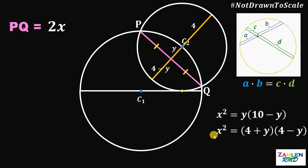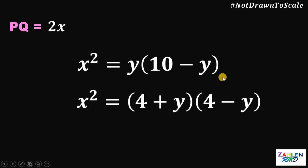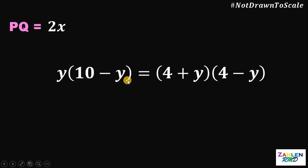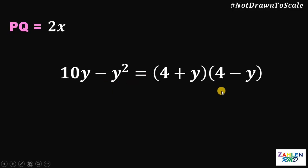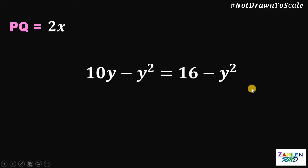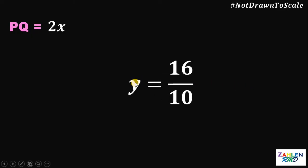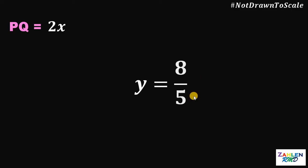We have two equations: x squared equals y(10 minus y), and x squared equals (4 plus y)(4 minus y). Since both equal x squared, we can equate them: y(10 minus y) equals (4 plus y)(4 minus y). Simplifying the left side gives 10y minus y squared, and the right side gives 16 minus y squared. Adding y squared to both sides: 10y equals 16. Dividing both sides by 10, y equals 16/10, which simplifies to 8/5.